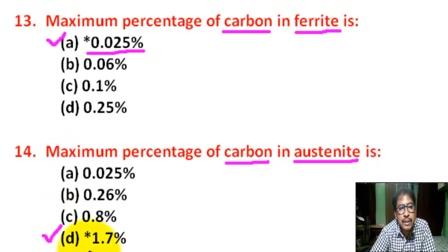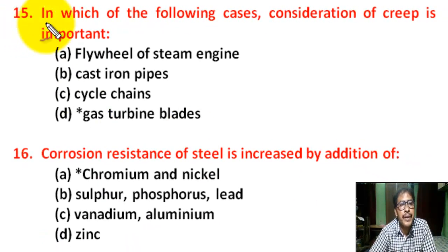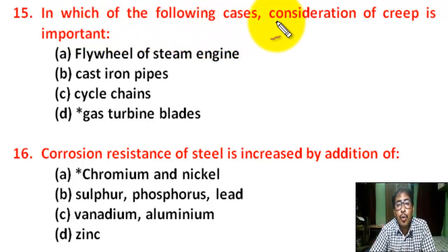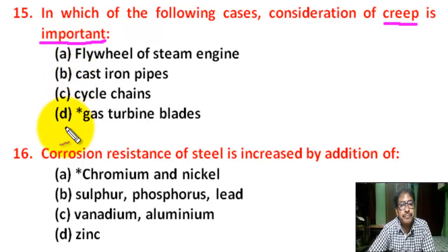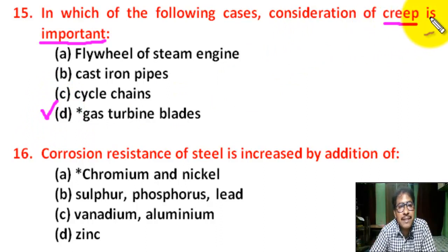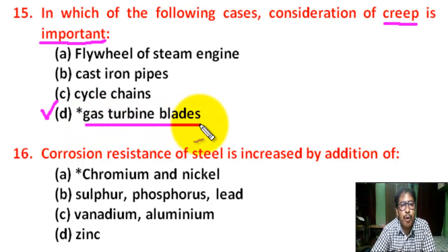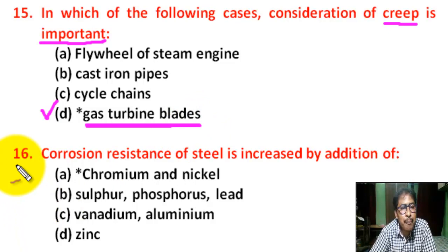Maximum percentage of carbon in austenite — correct answer is D — 1.7%. Question number fifteen: in which of the following cases does creep have its importance — correct answer is D — creep is important in making gas turbine blades.